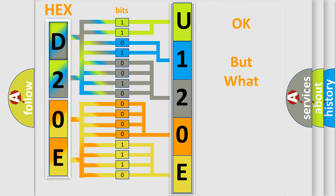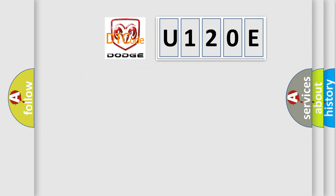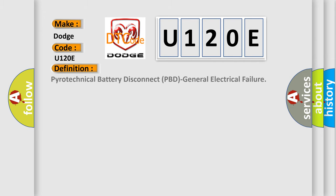The number itself does not make sense to us if we cannot assign information about what it actually expresses. So, what does the diagnostic trouble code U120E interpret specifically for Dodge car manufacturers? The basic definition is: pyrotechnical battery disconnect, PBD general electrical failure.